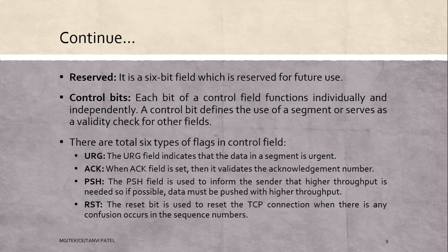The first control bit flag is URG. The URG field indicates that the data in a segment is urgent — it is urgently needed. Next is ACK: when the ACK field is set, it validates the acknowledgement number.